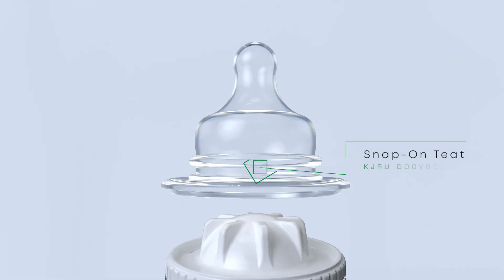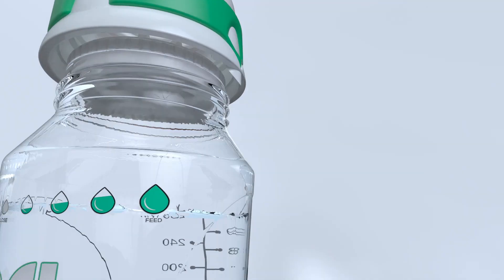Then, pull the snap-on teat through the collar. The rubber collar makes gripping easy.